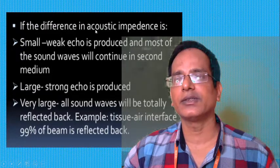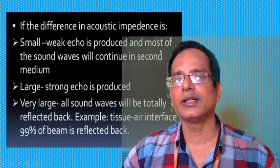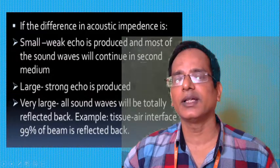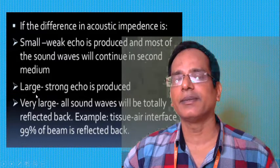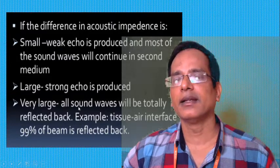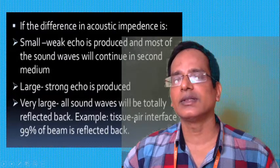If there is a small difference in acoustic impedance, a small weak echo is produced and most of the sound waves continue into the second medium. If the difference is large and strong, all sound waves will be totally reflected back as large, strong echoes. An example of a large strong echo is the tissue-air interface, where 99% of the beam is reflected back.